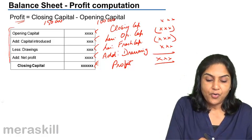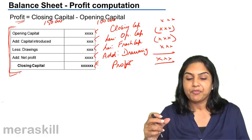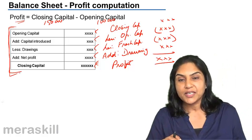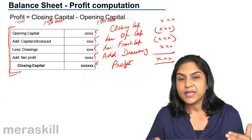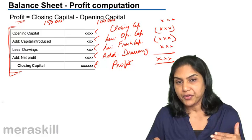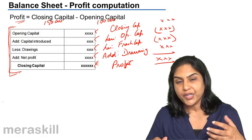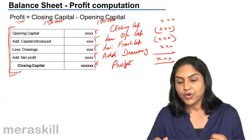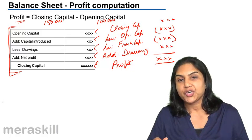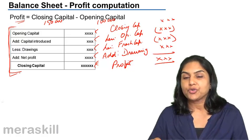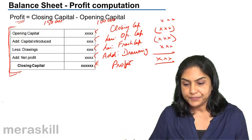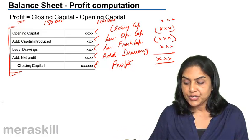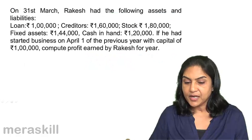Usually, this is how capital is represented in the balance sheet. Sometimes with the help of capital figures itself, we could compute profit. Closing capital minus opening capital would be profit. We add back the drawings since the amount of profits have been withdrawn, and reduce fresh capital to arrive at the profit for the year.